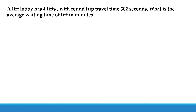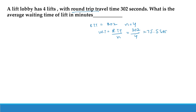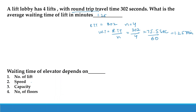The lift lobby has four lifts and the round-trip travel time is 302 seconds. The average waiting time is: WT = RTT / n = 302 / 4 = 75.5 seconds. Converting to minutes: 75.5 / 60 = 1.25 minutes. The answer is 1.25 minutes.